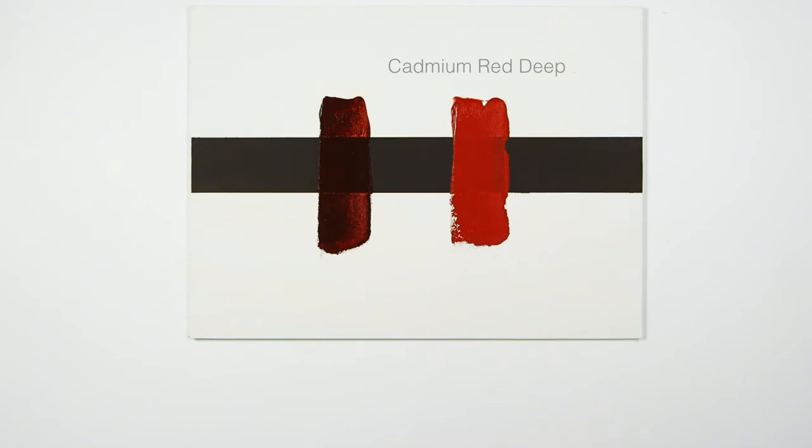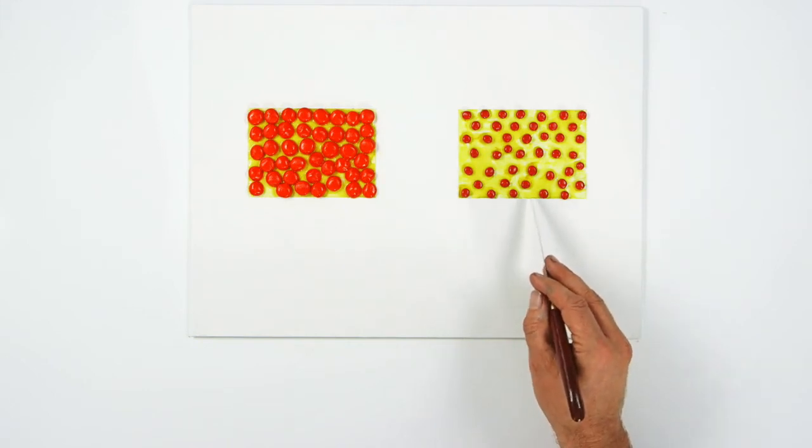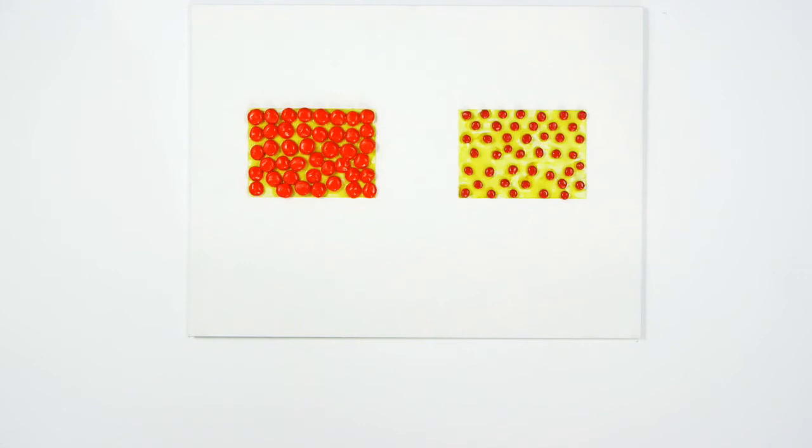These characteristics are explained by looking at the size of the pigment particles. Here I have a model of small spheres in an oil binder. You can see between them as they are small with a lower pigment volume concentration or PVC.